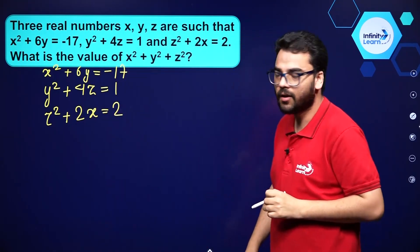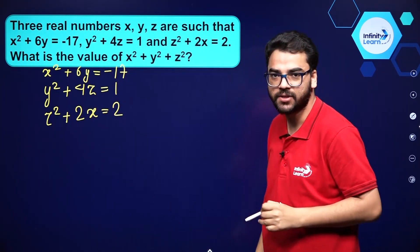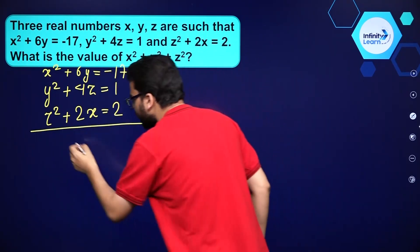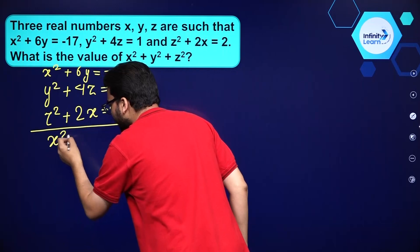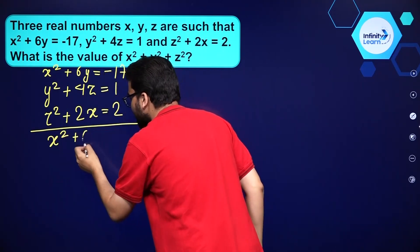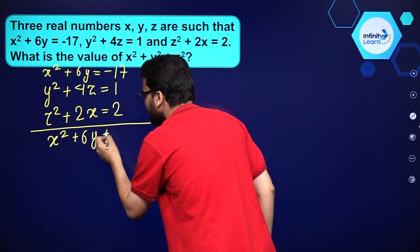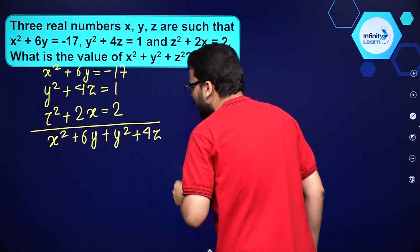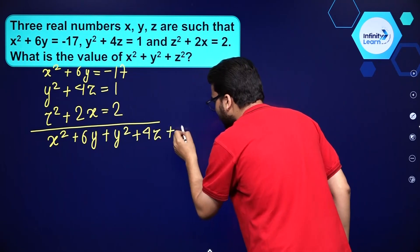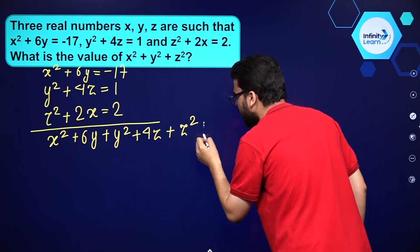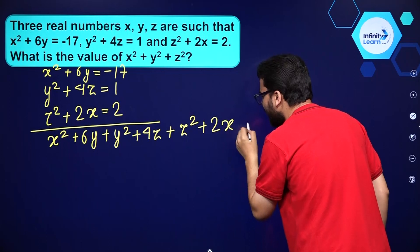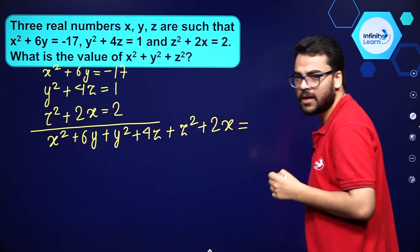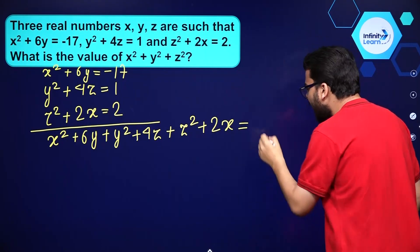So what we can do is add these three equations and see what we are getting. If we add, we get x square plus 6y plus y square plus 4z plus z square plus 2x on the left. On the right hand side, we get minus 17 plus 1 plus 2, which is equal to minus 14.